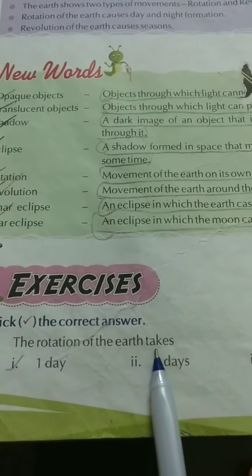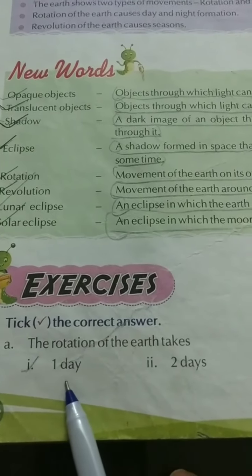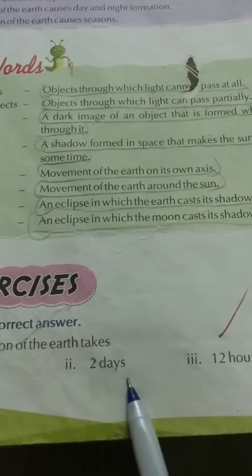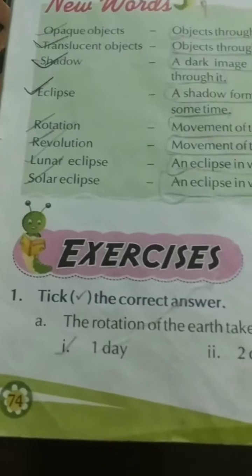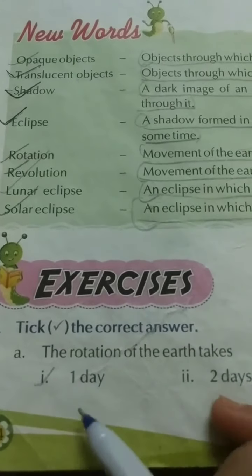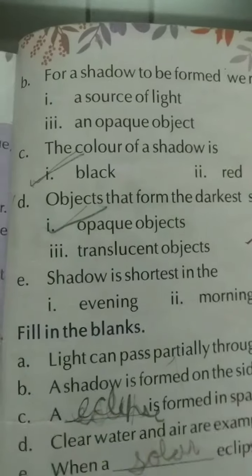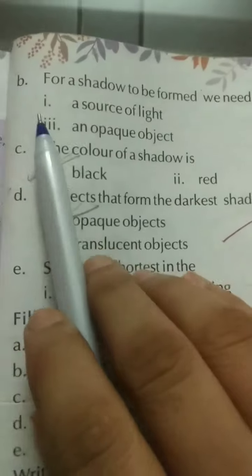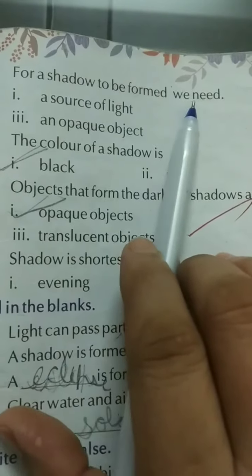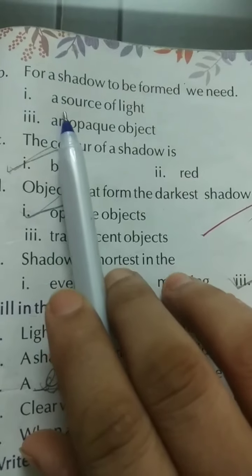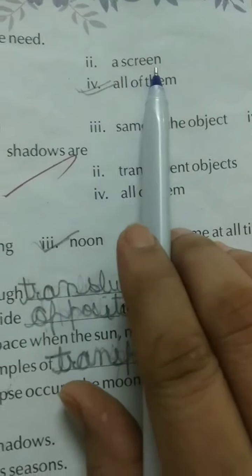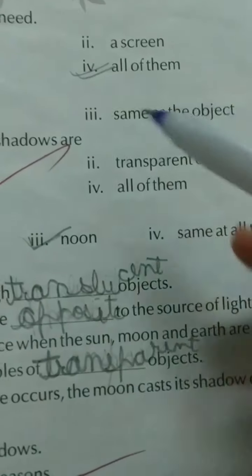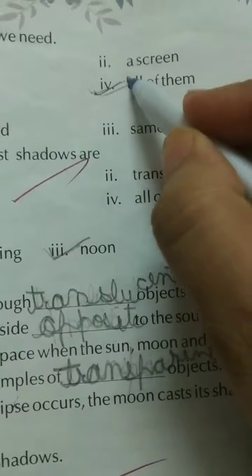Part one: The rotation of the earth takes one day, two days, 12 hours, one year. Correct answer is one day. Part B: For a shadow to be formed we need a source of light, a screen, and opaque object, all of them. Correct answer is all of them.